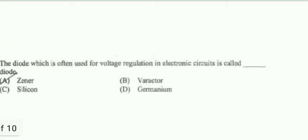Next one: the diode which is often used for voltage regulation in electronic circuits is? This is a well-known direct question. We know that zener diode is always used as a voltage regulator, so option A is the right answer.